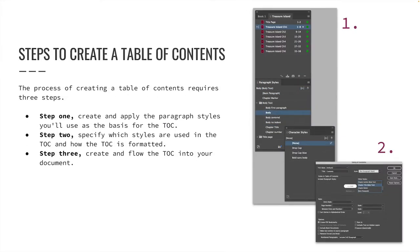Now that we understand what a table of contents style is, let's look at how to create the table of contents itself. The process requires three steps. Step one: create and apply the paragraph styles you will use as the basis for the TOC. Step two: specify which styles to use in the table of contents and how it is formatted. Step three: create and flow the table of contents into your document.